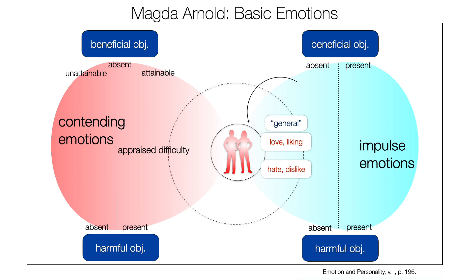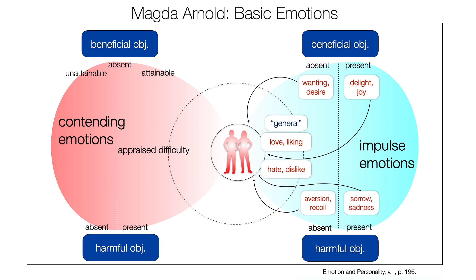On the upper right: wanting and desire, very much the same as the Thomistic desire. On the present beneficial object, we feel delight or joy. On the lower part, the absent harmful object produces aversion or recoil, and when it is present, we feel sorrow or sadness. On the left part: when a beneficial object seems attainable, we develop hope; when it seems unattainable, we feel despair — again, referring directly to Aquinas and Aristotle.